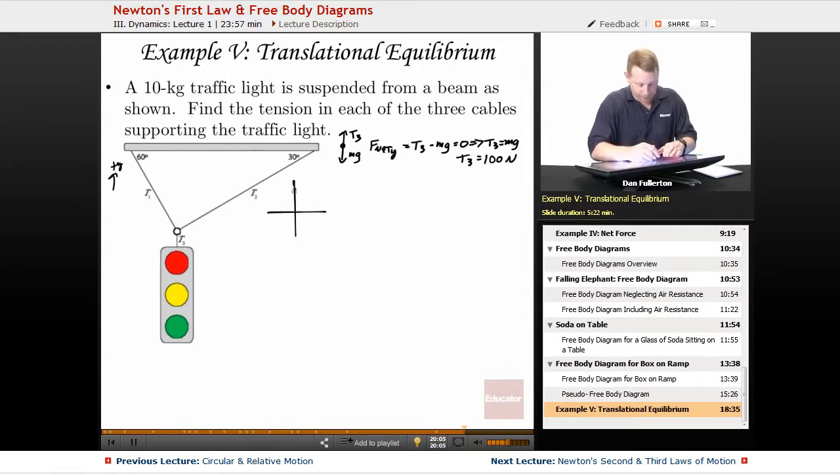Perhaps extend that a touch. All right so looking here, there's our object, we have pulling on it T3 down, we have T2 to the right which is going to have an angle of 30 degrees, there's T2, and we have T1 up and to the left at an angle of 60 degrees.